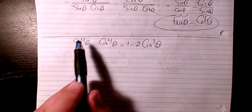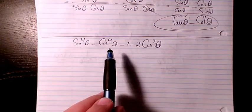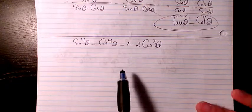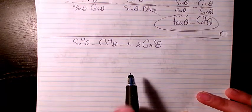So in this video I have sine to the power of 4 theta minus cosine to the power of 4 theta equals 1 minus 2 times cosine squared theta.